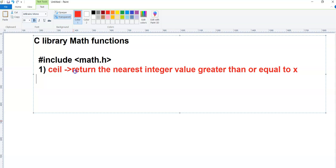Let's see what the ceil function is saying. Whenever we use the ceil function, it will return the nearest integer value greater than or equal to x. So imagine you use double n1 is equal to, you take a number like 4.6.